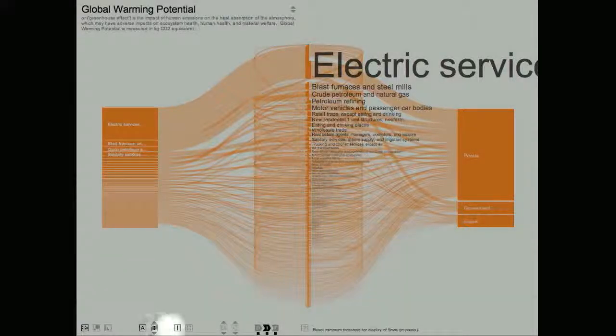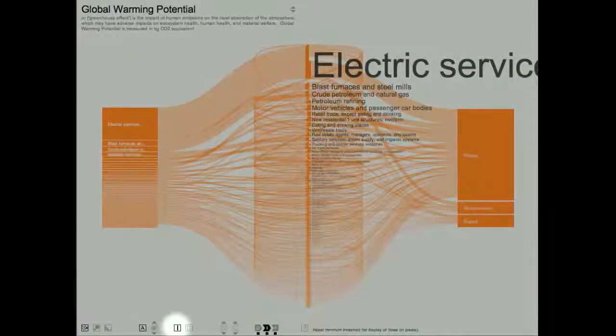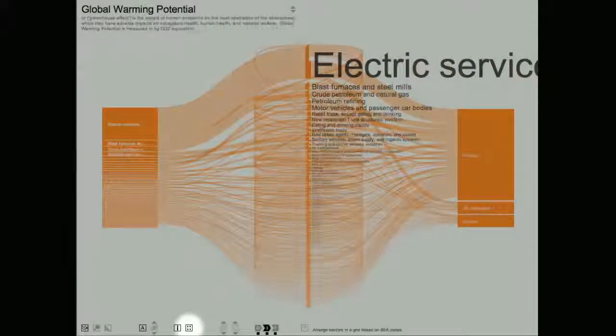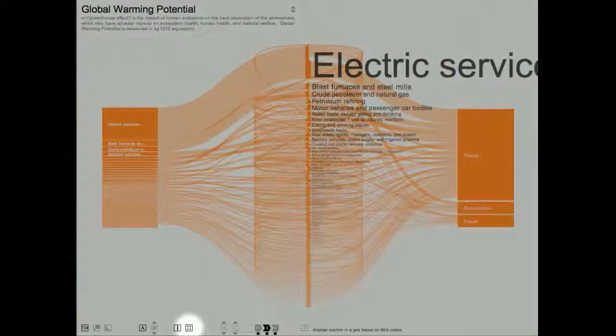The next button selects a stack arrangement of the sectors, which is what is shown here. Using the next button, I can select a grid arrangement, which arranges all of the sectors in a grid based on their classification by the Bureau of Economic Analysis. It is also possible to move individual sectors and groups of sectors manually, and I will explain this in more detail in a moment.